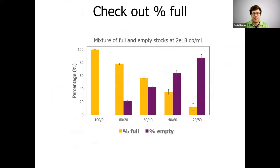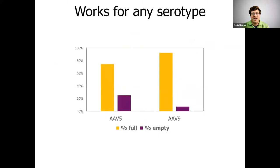Now let's look a bit more into our ability to see percent-full values. We took stocks of empty and full AAV9 and mixed them at different ratios. For each combination — 100% full, 80% full, and so on — Stunner gets a good read on the data, and the percent full and percent empty align well with our expected values. The great thing is the application works for any serotype. You just tell Stunner the basics about which serotype you have and what its DNA payload is, and Stunner will take care of all the heavy calculations.